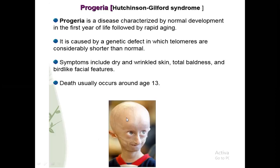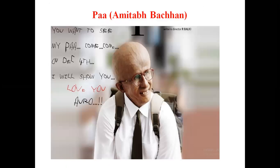This is the case of progeria in which the skin is dry and wrinkled, baldness is there, and the face looks like a bird. This is a very interesting example - many of you must have seen the movie 'Pa' starring Amitabh Bachchan, directed by R. Balki. In that movie, Amitabh Bachchan played the role of a progeria child, in which the child is born and immediately starts aging rapidly. It was a very good movie, and it explained progeria disease very well.